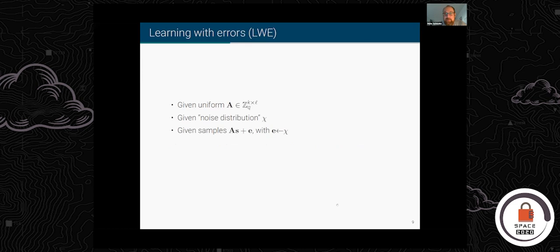Let's start with the mathematical basics. Here's the problem underlying most lattice-based KEM proposals. We start with a matrix with entries in Z_q. Q is typically a small number — it might or might not be prime. When I say small, it's something that fits in one machine register, think 11, 12, or 13 bits — nothing like the large numbers from RSA or elliptic curve arithmetic. So you have this matrix where entries are chosen uniformly at random modulo q.